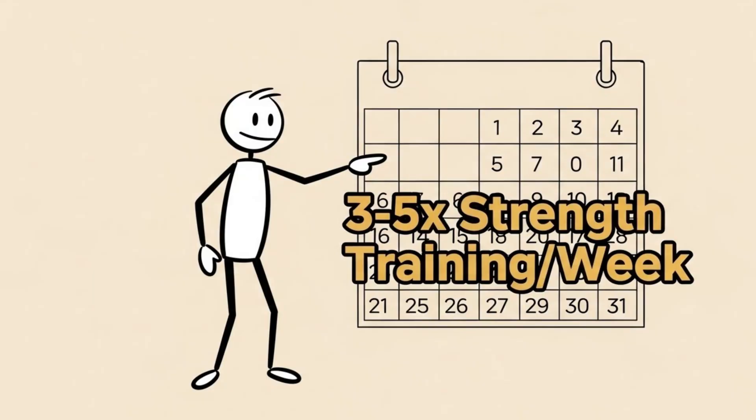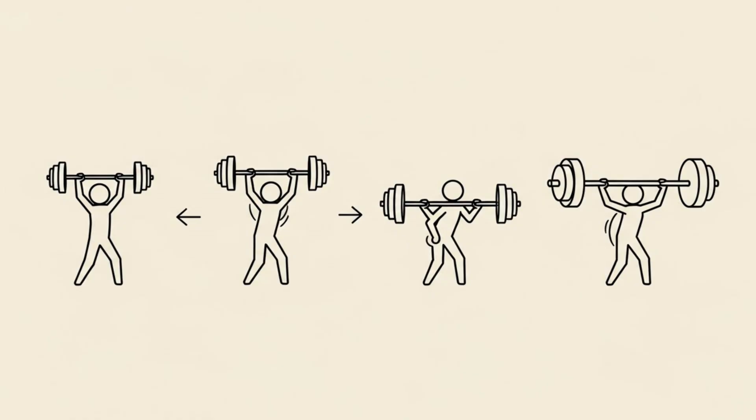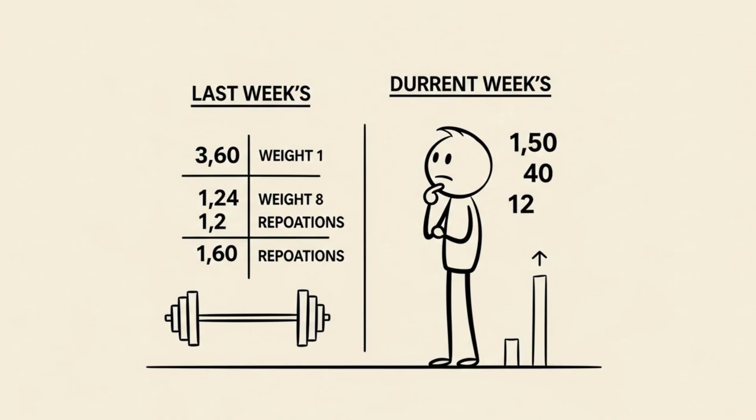Aim for 3 to 5 sessions of strength training per week. Focus on progressive overload, trying to do a little bit more weight or more reps than you did last week.